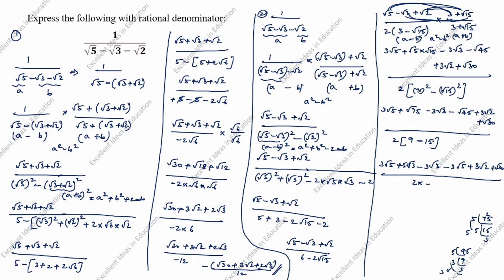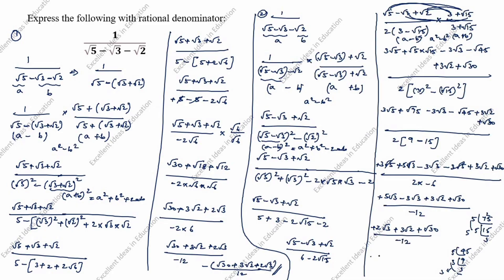You see the minus sign. So 9 minus 15 is minus 6. Next: 3 root 5 minus 3 root 5 cancel. Then 5 root 3 minus 3 root 3 is 2 root 3, plus 3 root 2 plus root 30, divided by 2 times minus 6, which is minus 12. Final answer: minus (2 root 3 plus 3 root 2 plus root 30) divided by 12. This is the answer.